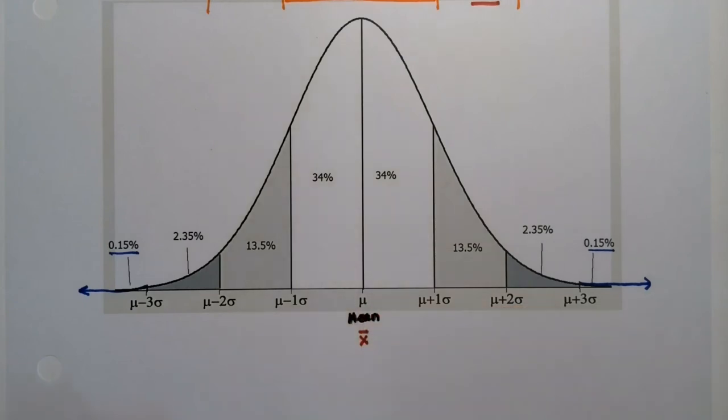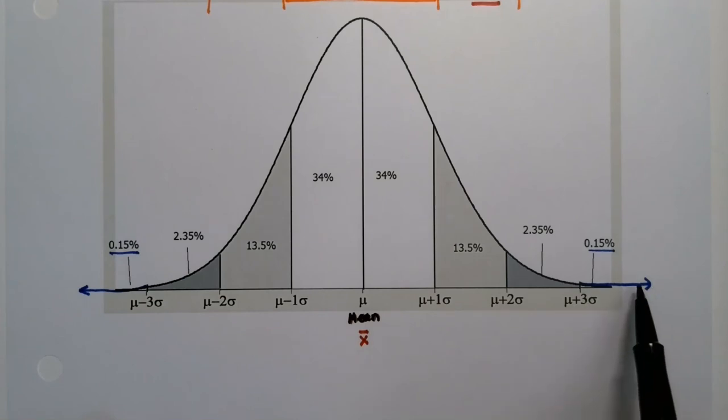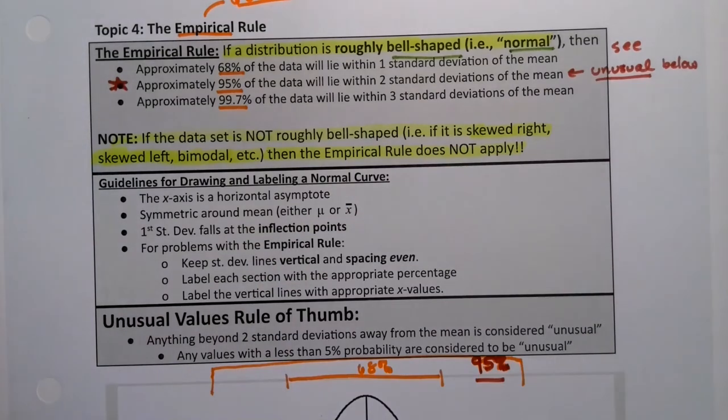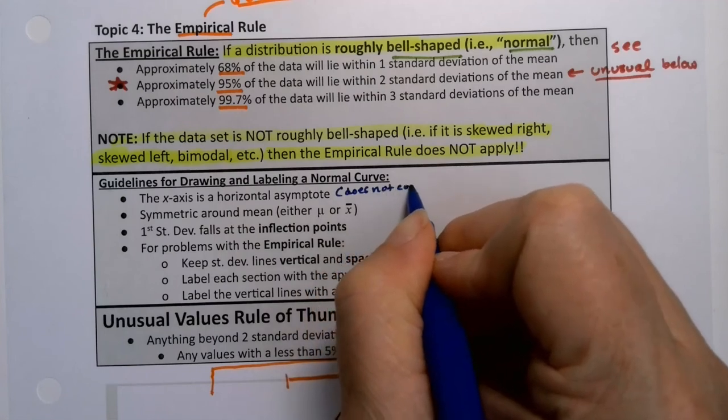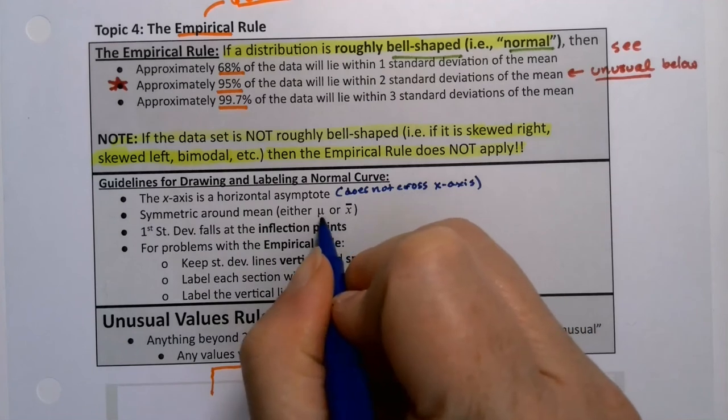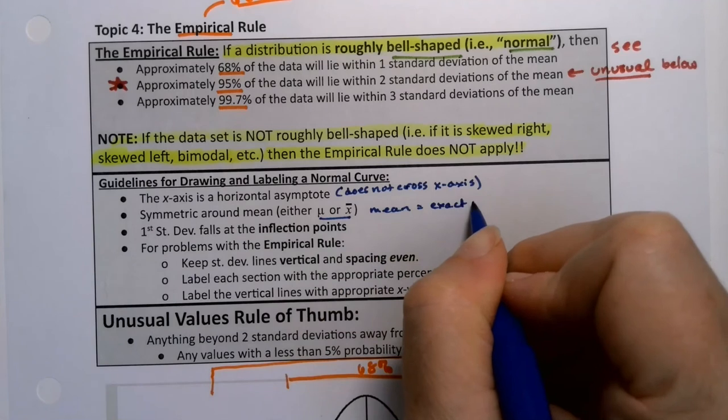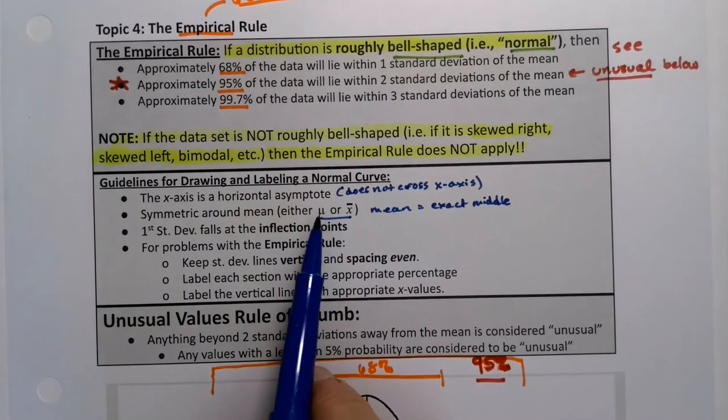Now I put mu in these notes, but it could also be x bar. It just depends on whether you're looking at a population or a sample. Either way, this is still the mean. Then it's symmetric about the mean, it's got a horizontal asymptote. All that means is that the graph comes closer and closer but never touches that x-axis. So this part right here means it does not cross the x-axis. And this means the mean is in the middle, and it could be either one of the means.